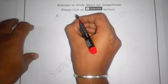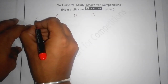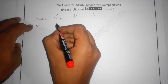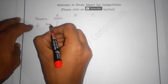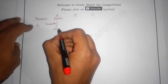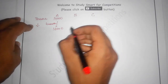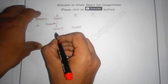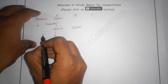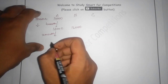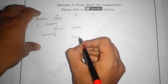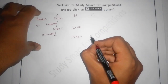Let me redraw this. A started the business and after 4 months A added Rs. 2,000, making the total Rs. 16,000. B invested after 4 months with Rs. 12,000. After 6 months total (4 plus 2), B withdrew Rs. 2,000 leaving Rs. 10,000 with B, and C additionally entered with Rs. 20,000.